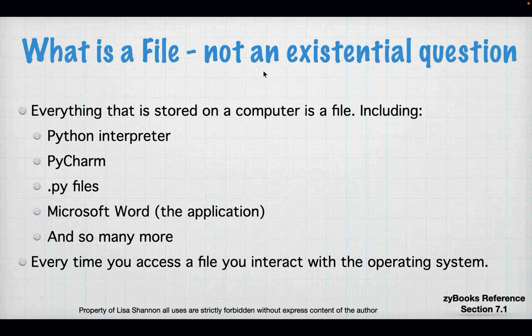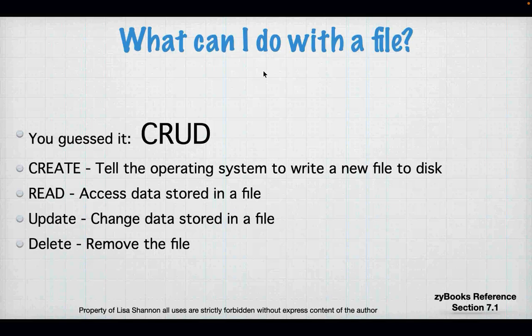That may be starting up Microsoft Word as a program, or typing into PyCharm — all of those are interacting with the operating system. What can you do with a file? CRUD: create, read, update, and delete. Create tells the operating system to write a new file to the disk. Read gets the data from the file. Update changes the data stored in the file. Delete removes the file. Just like with lists, dictionaries, and strings, it all comes down to create, read, update, and delete.